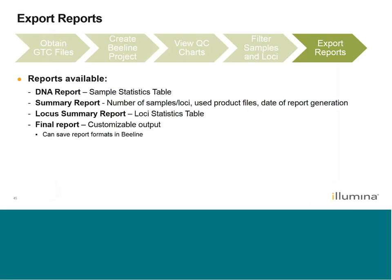We've created our project, looked at QC metrics, and filtered what we didn't want in our final report. Now we're ready to generate a report. There are a couple of report formats readily available: a DNA report (output from the sample statistics table), a summary report (all experiment details), a loci summary report (all information in the SNP/loci statistics table), and a final report — a customizable output where you can include genotype calls in a specific strand format, chromosome and location, probe sequence, and more. You can save those report formats in Beeline. To create a report, go to Reports in Beeline, select which report types you want, and there's also an option to save favorite formats.